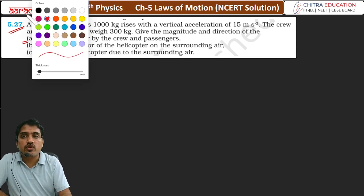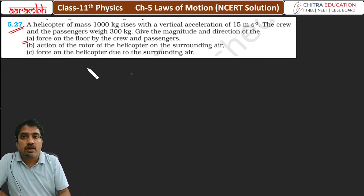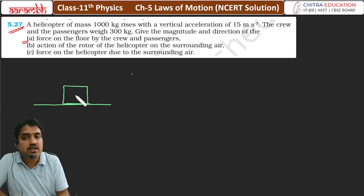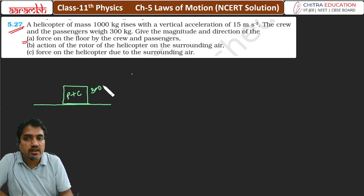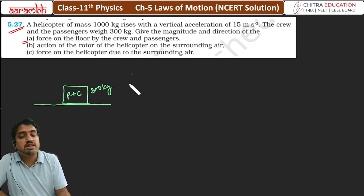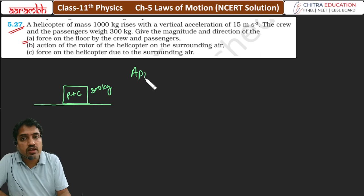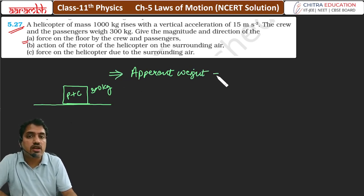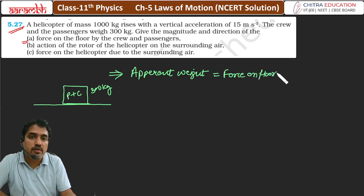Yeh helicopter upar ki taraf move kar raha hai. Toh agar hum yahan par passenger aur crew ka combine mass consider karein, toh passenger aur crew ka combine mass 300 kg given hai. Toh yahan par hum iska apparent weight count karenge. Aur jo apparent weight hoga, wahi force ke barabar hoga — force on floor ke barabar hoga.